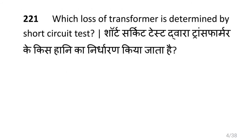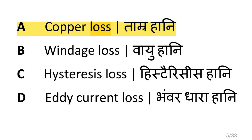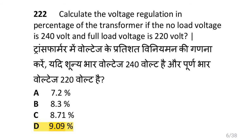Which loss of a transformer is determined by the short circuit test? That is copper loss (I²R). Calculate the voltage regulation in percentage of a transformer if no-load voltage is 240 volts and full load voltage is 220 volts. The percentage voltage regulation is the change in voltage (20) divided by 240 volts multiplied by 100, which comes out to be 9.09%.